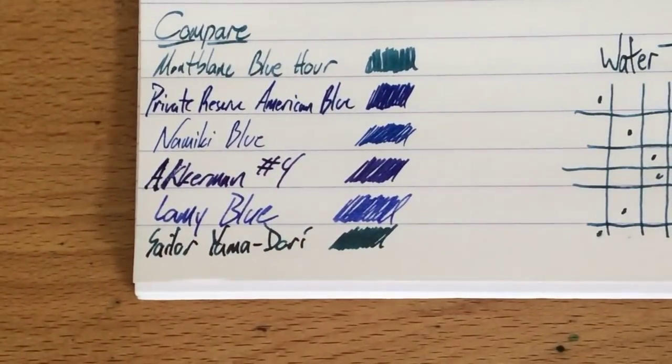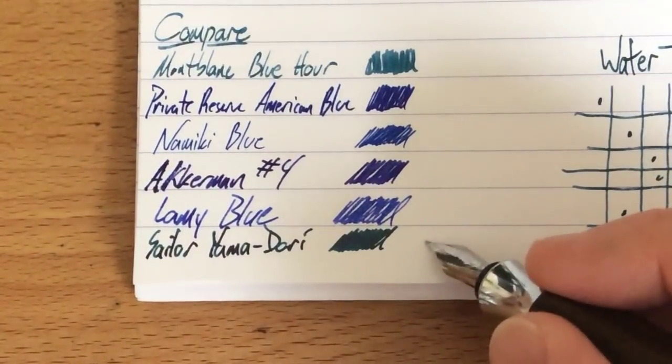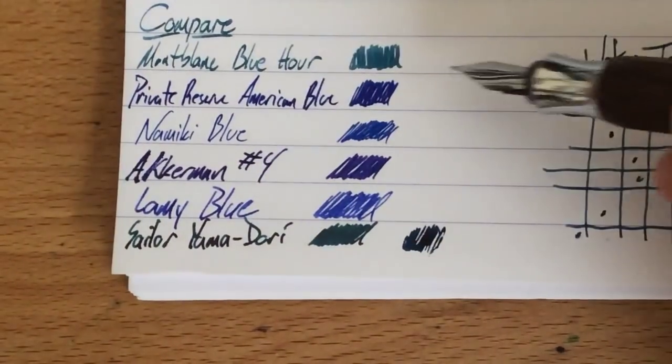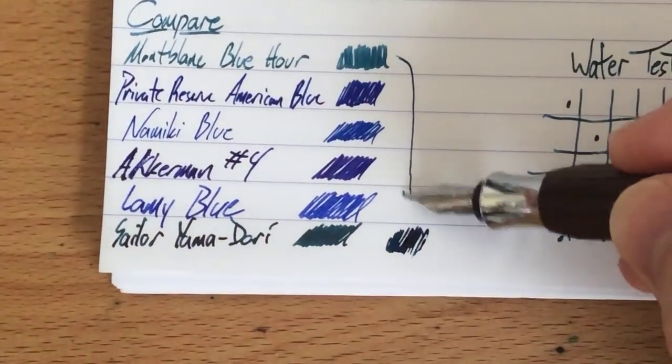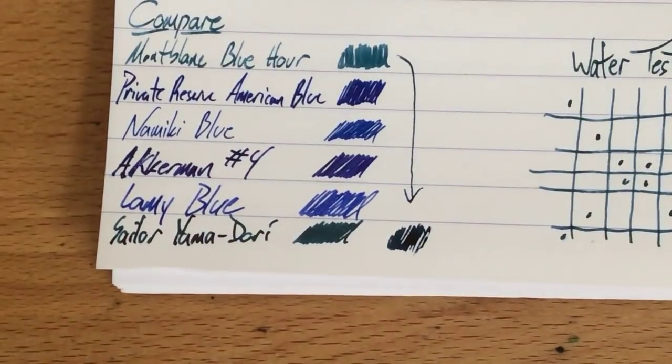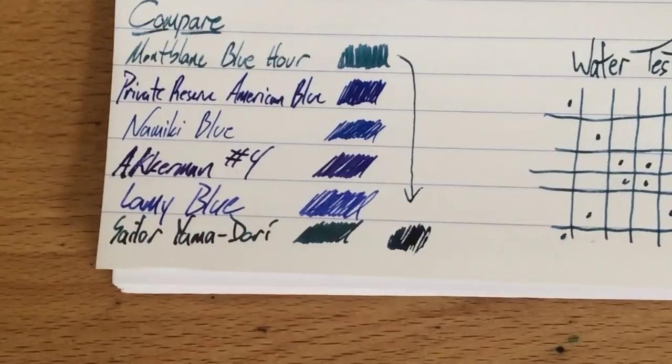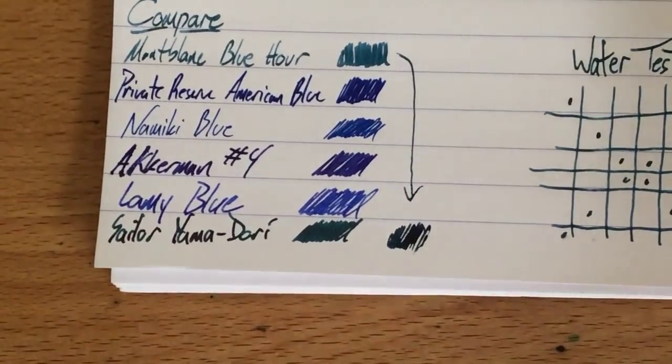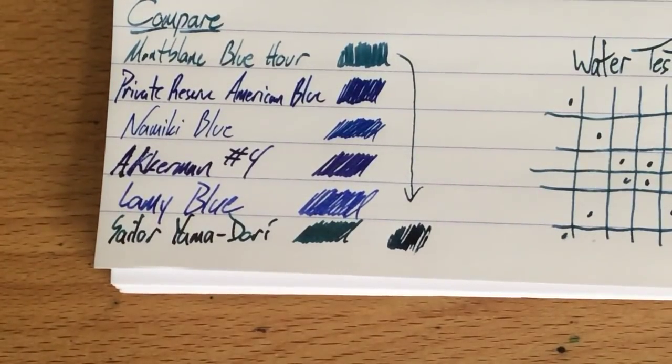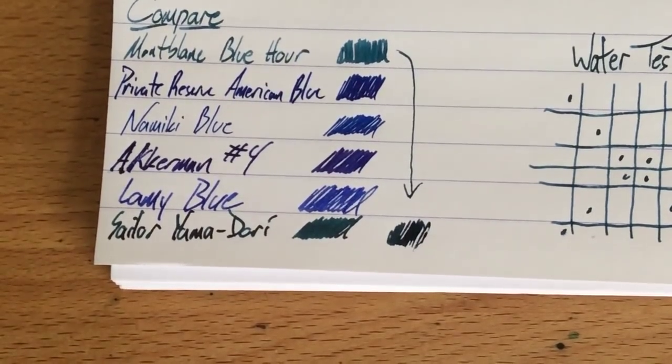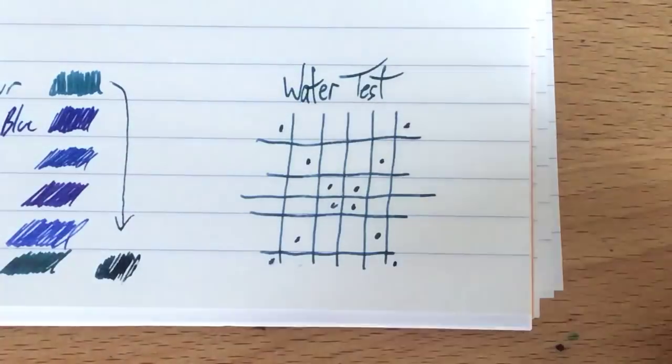Let's do a little scribble of Blue Hour next to it with the Ondoro. I don't know, I guess if you use the Ondoro it's pretty close. So if you put down enough ink, then Blue Hour does look a lot like Yamadori. So if you like Yamadori but can't get a hold of it, get some Blue Hour. I don't know, that's a weird way to go because Yamadori's not limited. But that's the thing you can do. They're fairly close.